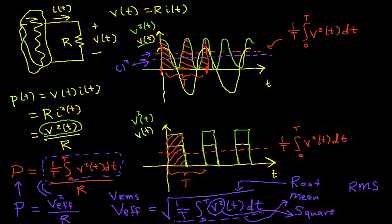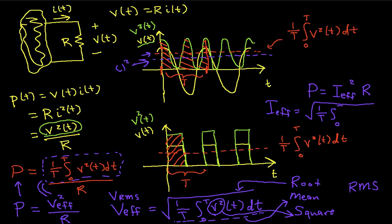Similarly, the average power can be written as the effective current squared times R, where the effective current — the RMS current — is the square root of (1/T) times the integral from 0 to T of I²(t) dt. That defines RMS values.